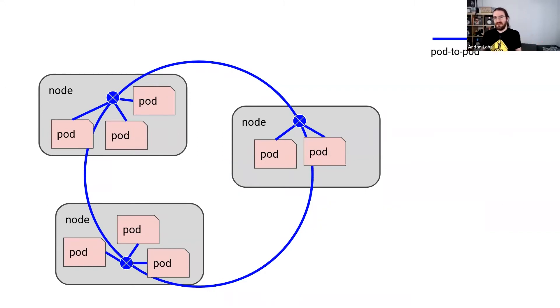And on that network, you generally cannot use any IP address you want. You can only use the IP addresses that have been given to you. And so if you use bridging in that case, it doesn't work.